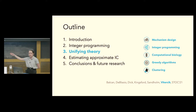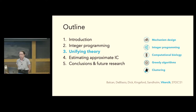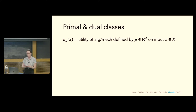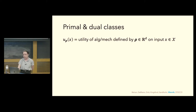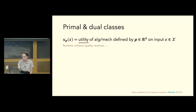I'm going to describe how this structure implies statistical bounds, and tie in mechanism design and other combinatorial problems like computational biology, greedy algorithm configuration, and clustering — primarily from a STOC '21 paper with Nina Balkin, Dan de Blasio, Travis Dick, Carl Kingsford, and Thomas Sandholm. To discuss algorithm configuration in this general setting, I'll introduce notation: u_rho of x is the utility of the algorithm defined by parameters rho on input x, where X is the set of problem instances, and utility means runtime, solution quality, revenue, and so on.